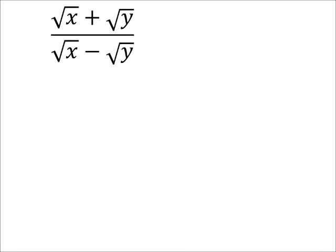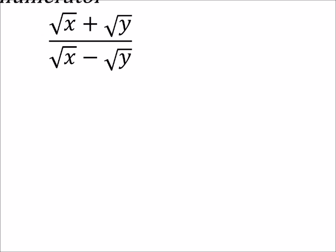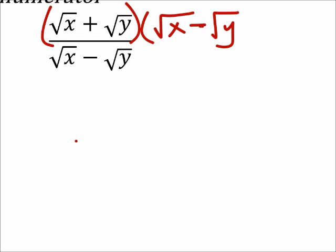Alright, so this is what we got. Let's go ahead and multiply the numerator by its conjugate, which would be the square root of x minus the square root of y. But we'll need to multiply it in the denominator as well.